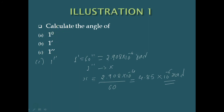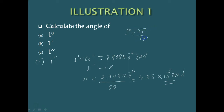This first problem was about expressing angles in terms of radians. One important thing to remember is that 1 degree equals π/180 radians — this is the key formula whenever converting degrees to radians.